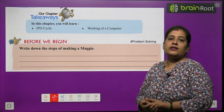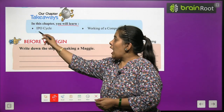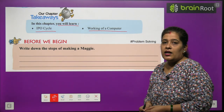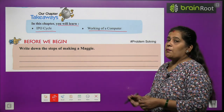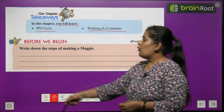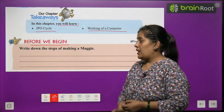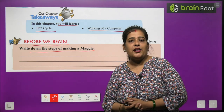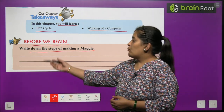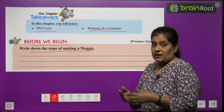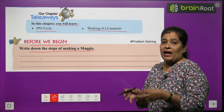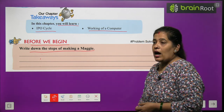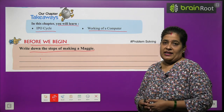In this chapter you will learn the IPO cycle and working of a computer. Before we begin, write down the steps of making a Maggi. What do you need to do? First of all, what do you need to do — add a gas stove, add spices, etc. So, you have to write the steps of making Maggi.